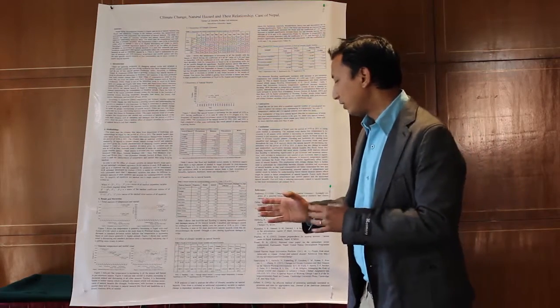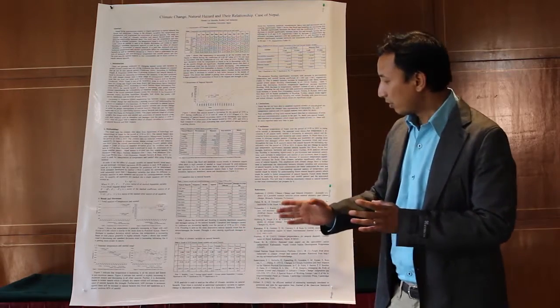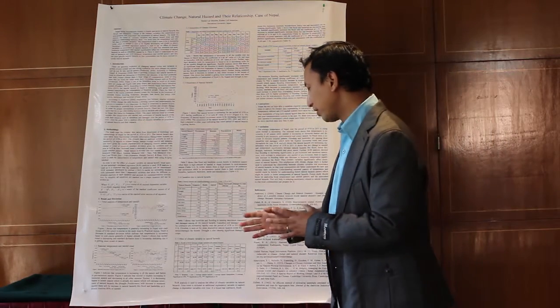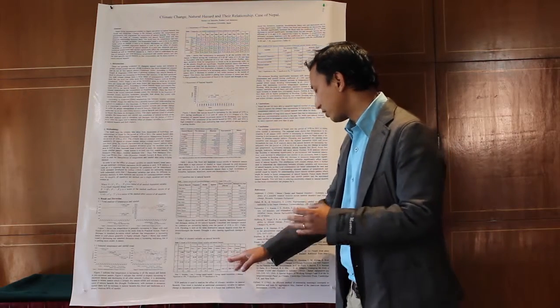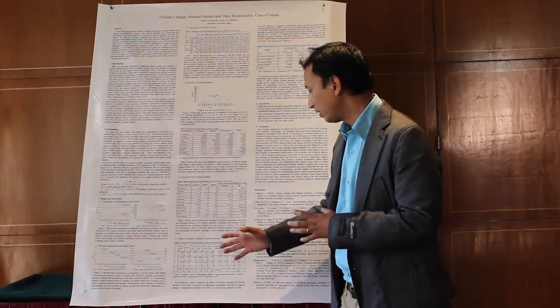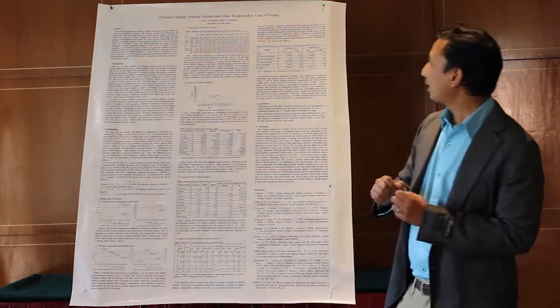With decreasing rainfall, there will be an increase in forest fire. Similarly, for temperature, with increasing temperature, there will be more heat waves. But if the temperature decreases, there will be more hailstorms.